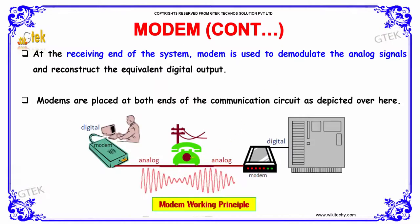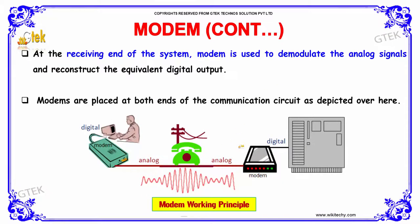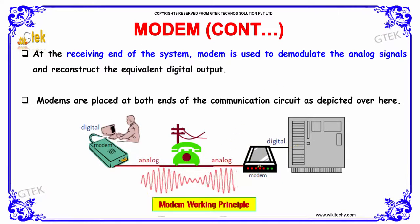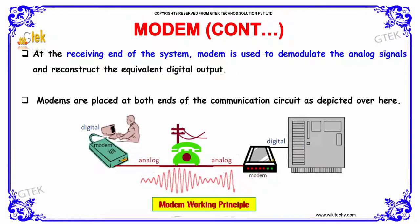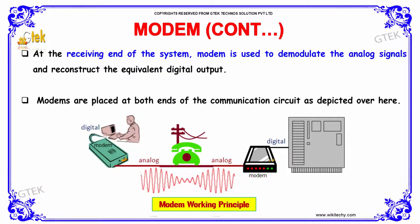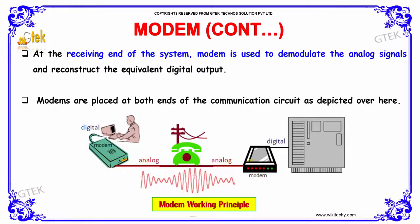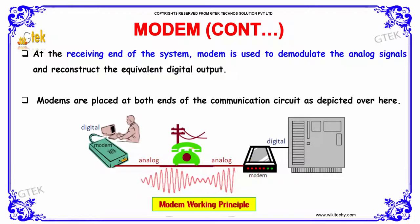At the receiving end of the system, the modem is used to demodulate the analog signals and reconstruct the equivalent digital outputs. The modem is placed at both ends of the communication circuit, as shown here.